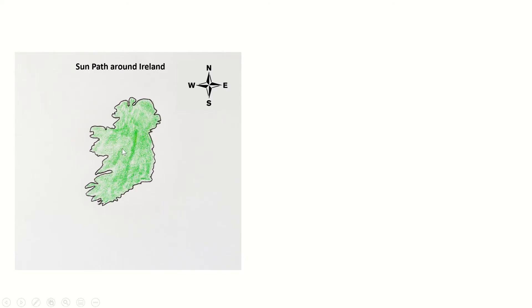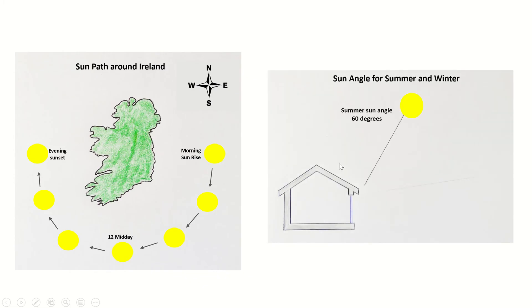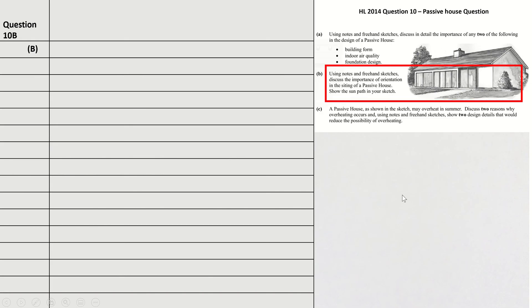Before Part B, I want to quickly show you sun paths around Ireland. The sun rises in the morning in the east, at 12 midday it's in the south, and in the evening it sets in the west. The summer sun angle is approximately 60 degrees — that's related to our latitude in Ireland. In the winter, we have a much lower sun angle of only 13 degrees, because we have a much shorter day: the sun might not rise until 8:30 and could set again at 4:30, whereas in summer it could rise at 5am and not set until 10:30.